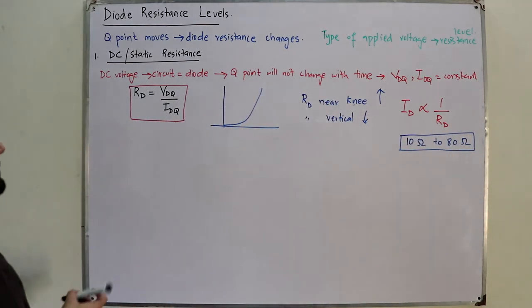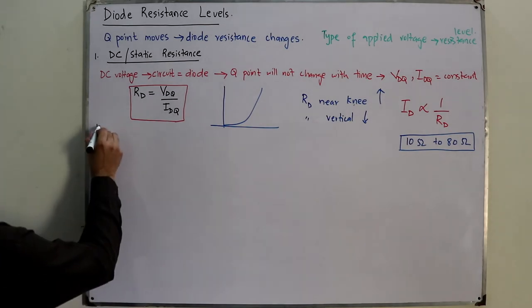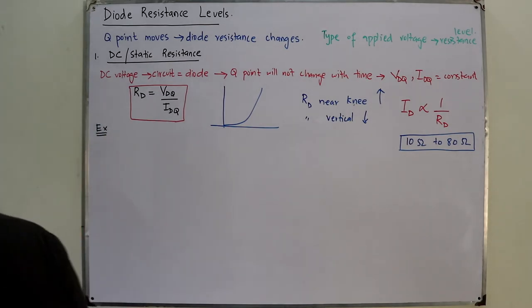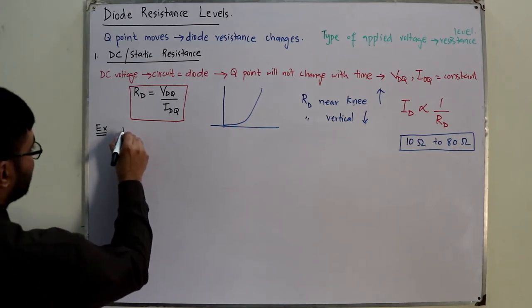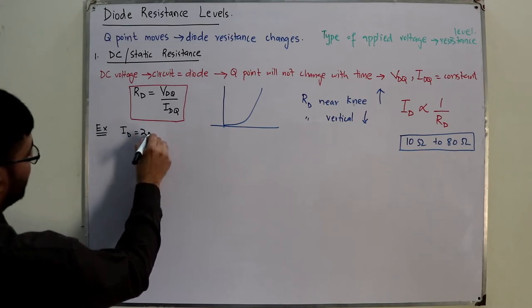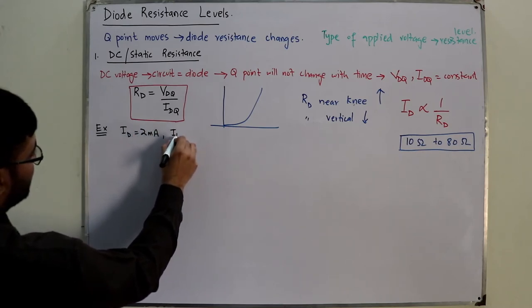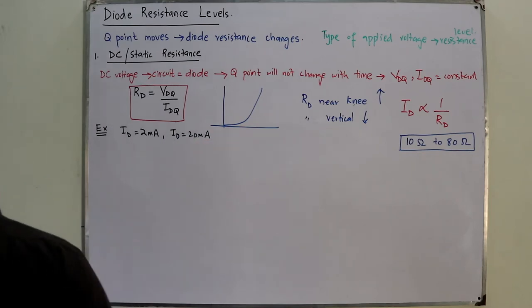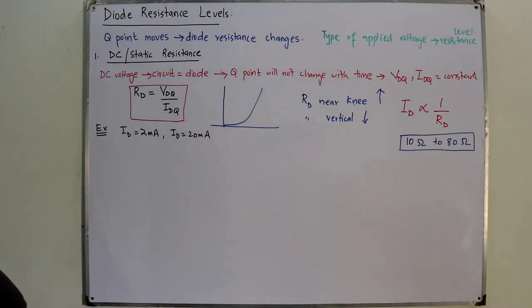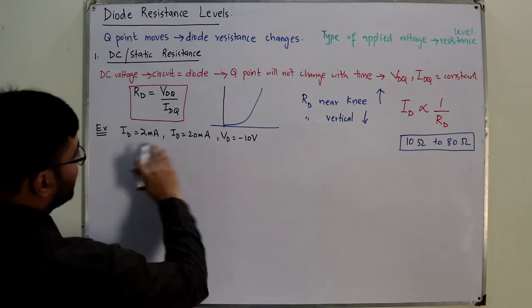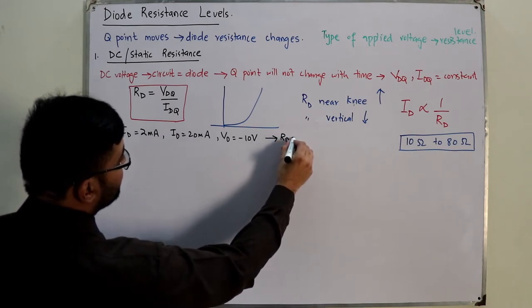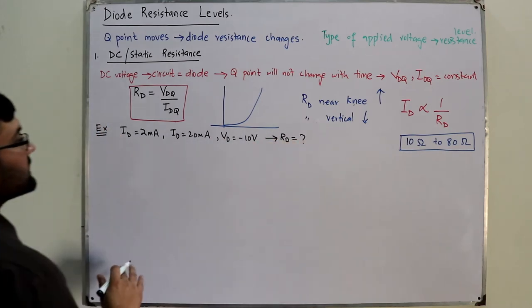Example. Come to the book example. What does it state? Determine the resistance levels of the diode at Id equals 2 milliamps, Id is 20 milliamps, and Vd is minus 10 volts. And these three conditions, you need to find the DC resistance. The graph is given.